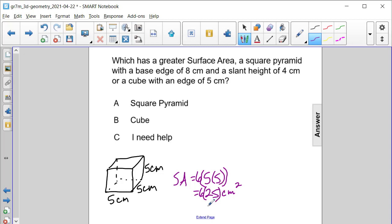So 6 times 25, you can think of 6 quarters. If you have 6 quarters, you have $1.50, so it'll be 150 square centimeters for the surface area of this cube.